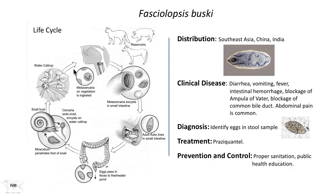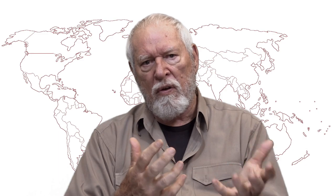The metacercaria is then swallowed and it exists in the small intestine. Unlike Fasciola, which penetrates the small intestine and migrates in the peritoneum until it gets to the liver, Fasciolopsis is content to stay just where it exists. It stays in the lumen of the small intestine attached to the columnar epithelium, and that's where it ingests tissue. It actually eats the columnar cells of the small intestine, which rapidly regenerate even if they're not being consumed on the villi.